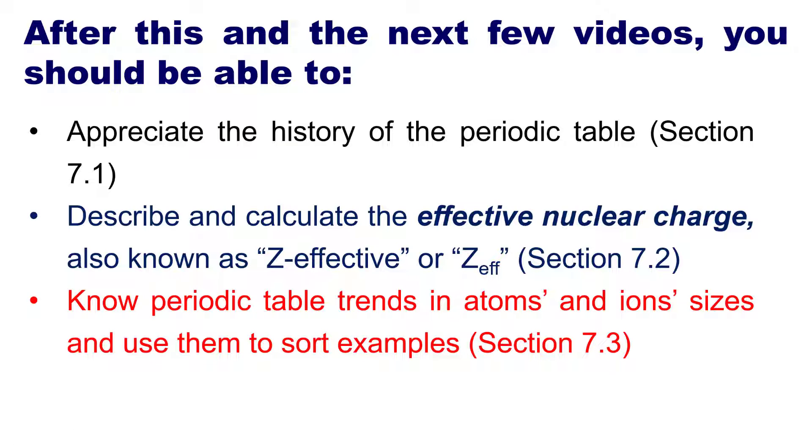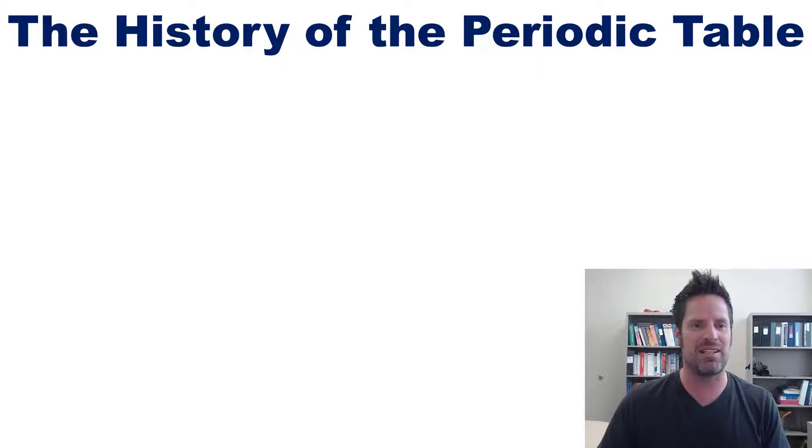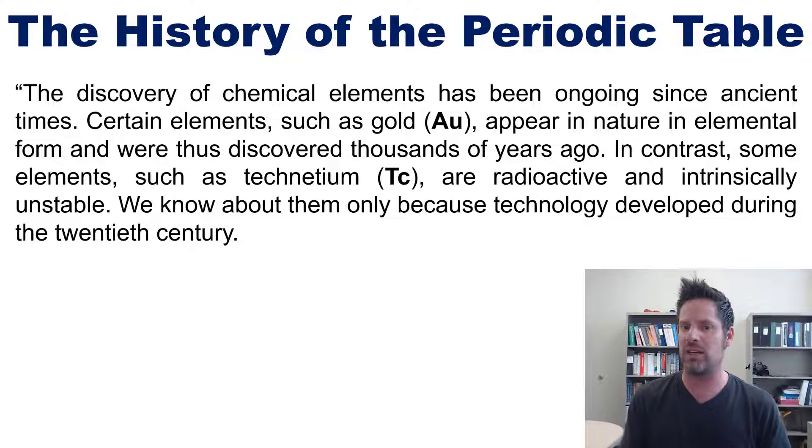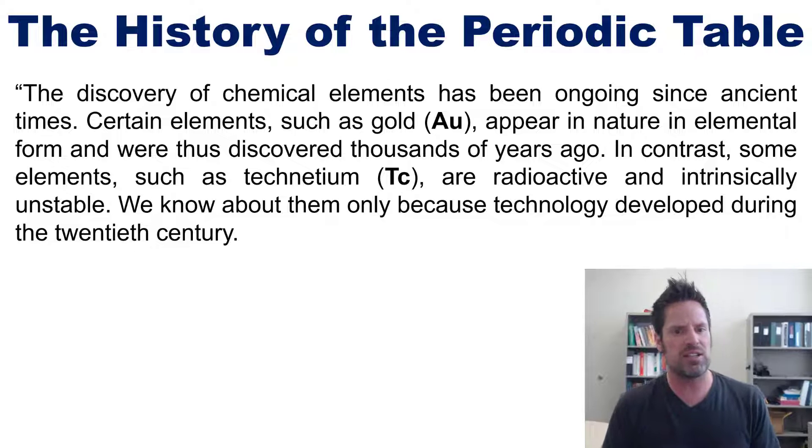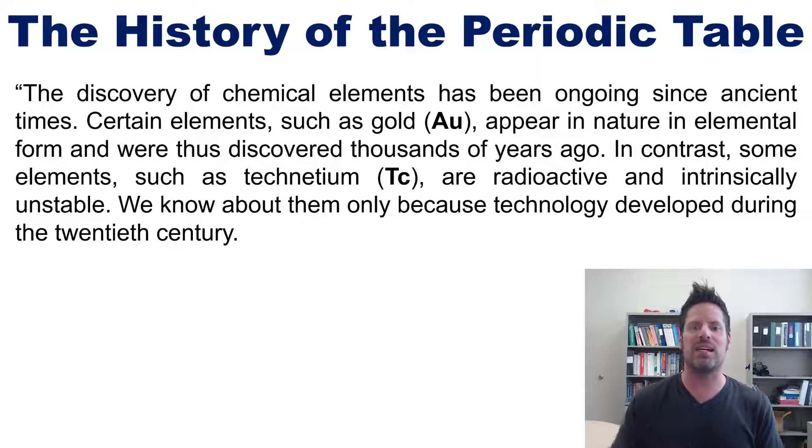The discovery of chemical elements has been ongoing since ancient times. Certain elements such as gold appear in nature in elemental form and were thus discovered thousands of years ago. In contrast, some elements such as technetium are radioactive and intrinsically unstable.